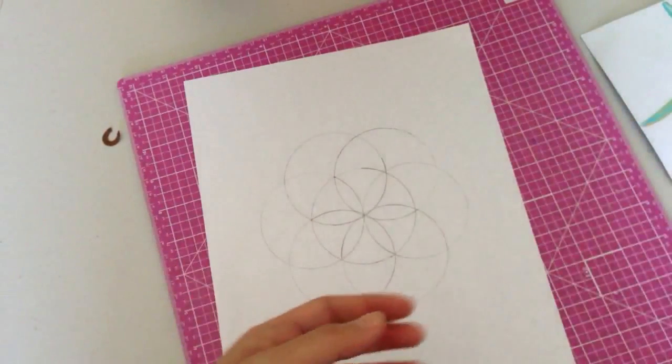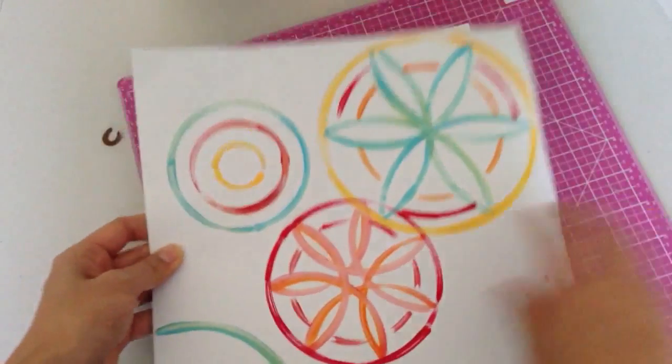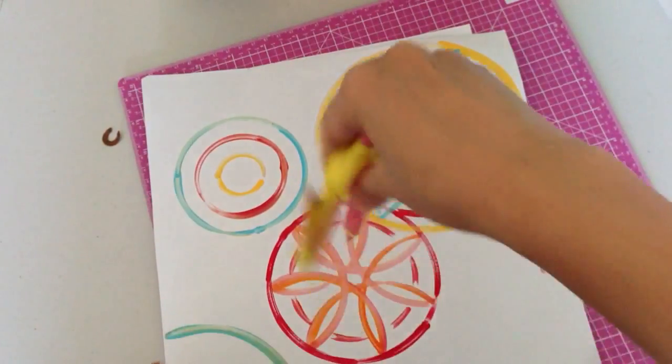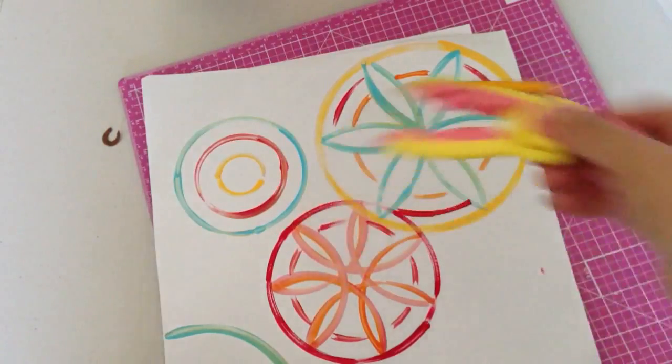And then you can use, I use acrylic paints for this one. You can use watercolors but it comes out lighter. Stick a paintbrush on there, dip the paint in, and then draw some circles.